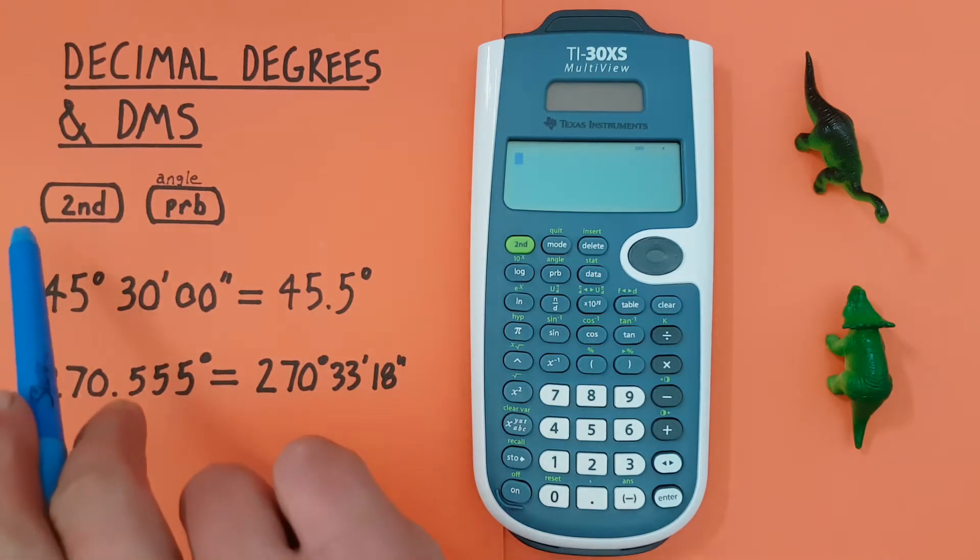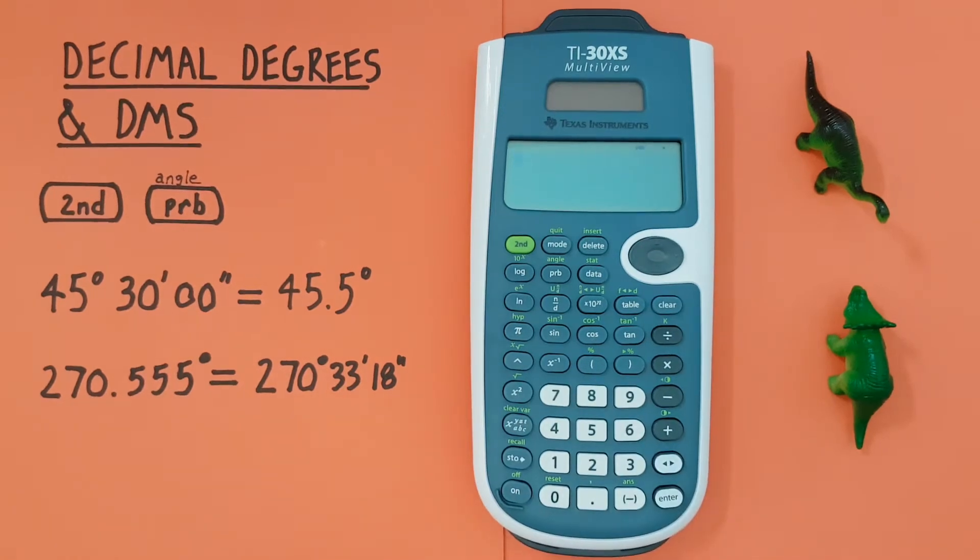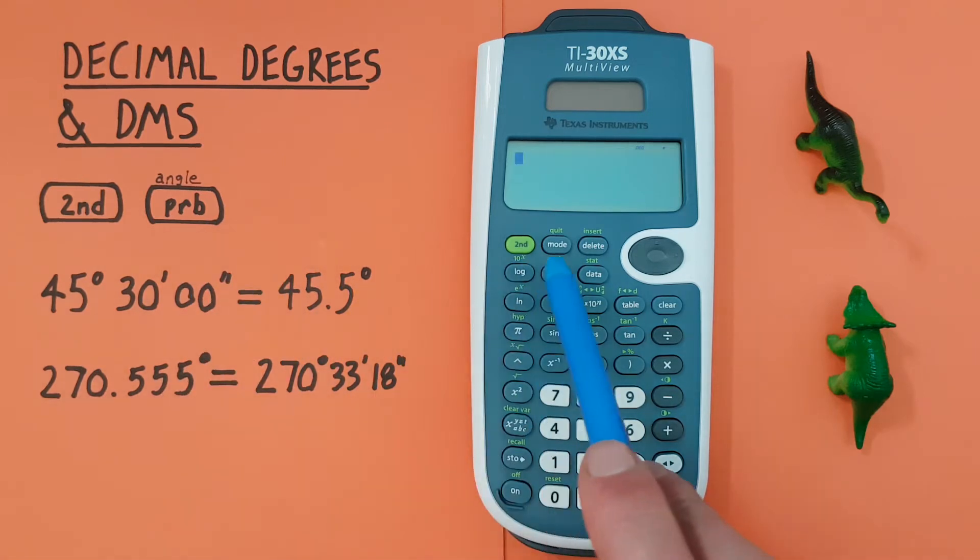To do that we'll be using the second function key, it looks like this, located here, as well as the probability key with the second function of angle, it looks like this, located here.